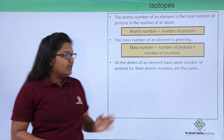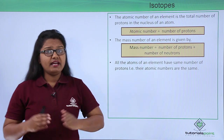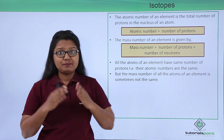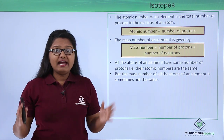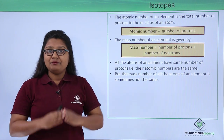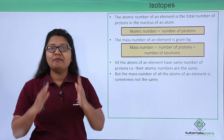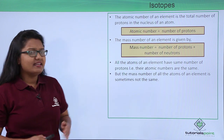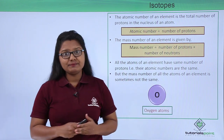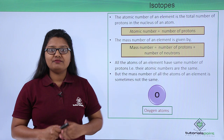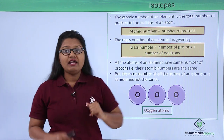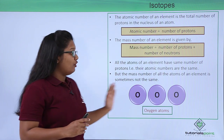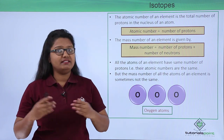It is also known that all the atoms of a particular element have the same atomic number, but for some elements it is possible that all the atoms may not have the same mass number, even if they have the same atomic number. For example, when comparing oxygen atoms, we may find their mass numbers to be different from each other even if all of them represent the same oxygen atom.